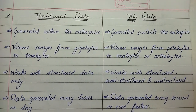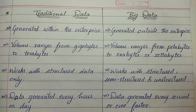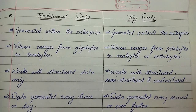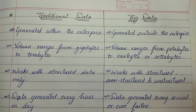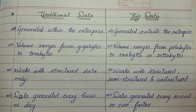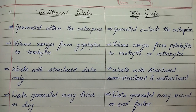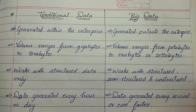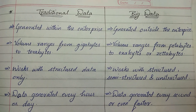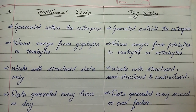For traditional data, volume ranges from gigabytes to terabytes, and for big data, volume ranges from petabytes to hexabytes or zettabytes. Traditional data works with structured data only, while big data works with structured, semi-structured, and unstructured data as well.